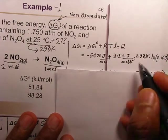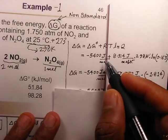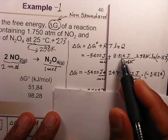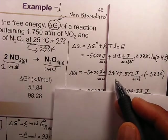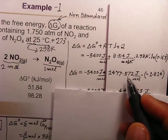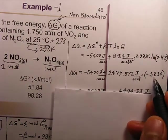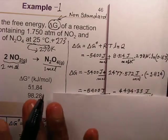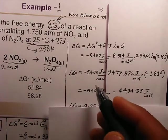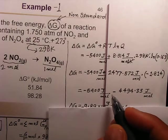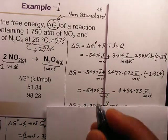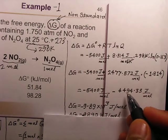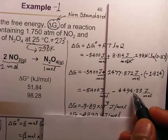The Kelvin units cancel and we take a common unit of joules per mole. Multiplying R times T gives 2477.572; then multiplied by ln(0.163), which is negative, both terms come out negative. We then add minus 5400 and minus 44194.33 joules per mole together.